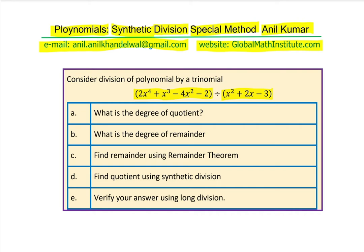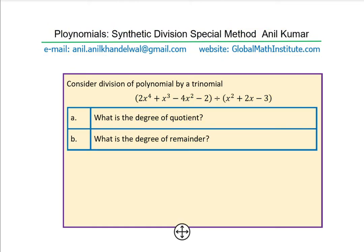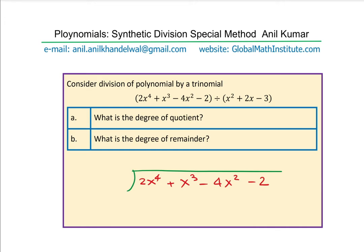Now let's get back to the solution. We'll figure out the degree of the quotient and the degree of the remainder. The function given to us is 2x to the power of 4 plus x cubed minus 4x squared minus 2, and we are dividing by x squared plus 2x minus 3. Let me rewrite this in long division form.